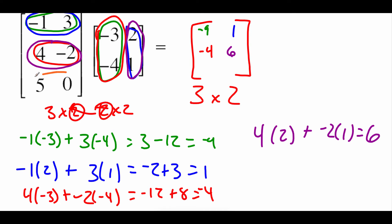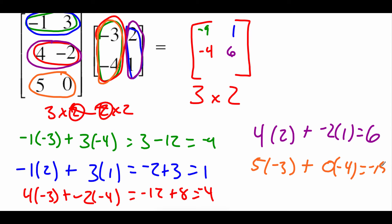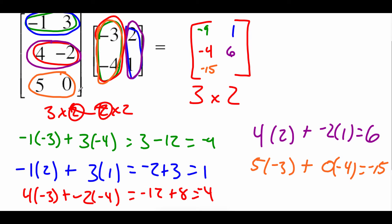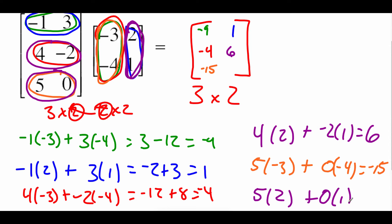Down to the third row. Third row times first column: five times negative three plus zero times negative four. Five times negative three is negative fifteen. Then the last value — the five zero row times the two one column: five times two plus zero times one gives us ten. So when we multiply these two matrices together we get this brand new three by two matrix.